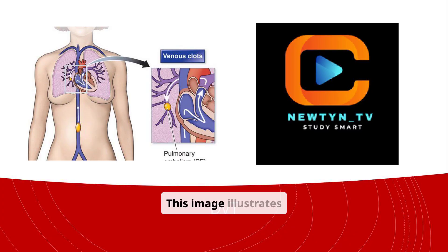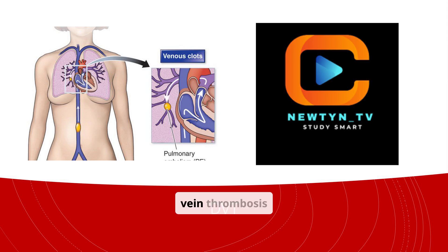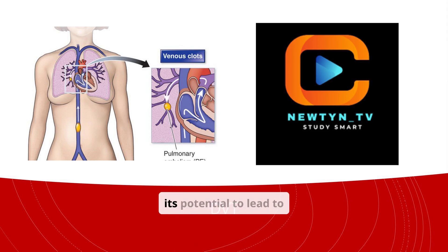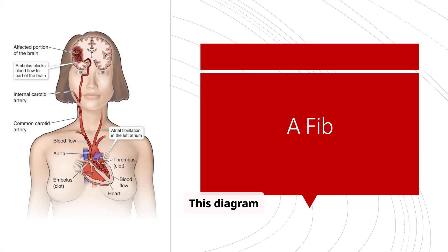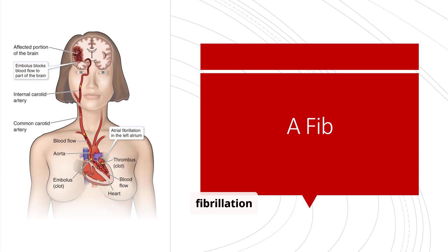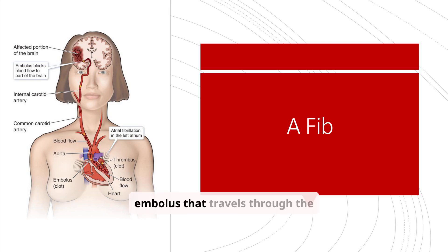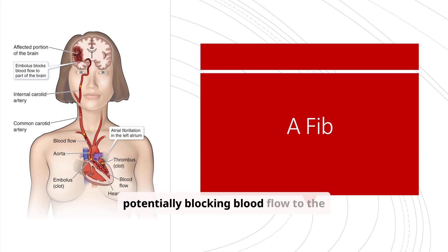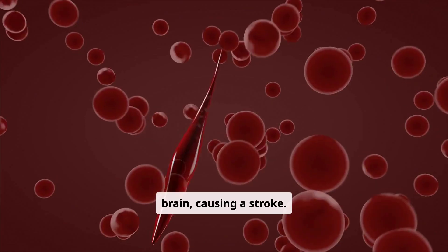This image illustrates venous clots, specifically focusing on deep vein thrombosis (DVT) and its potential to lead to pulmonary embolism. This diagram illustrates the effects of atrial fibrillation (AFib): a thrombus in the left atrium of the heart can lead to an embolus that travels through the bloodstream, potentially blocking blood flow to the brain and causing a stroke.